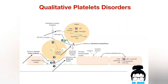Another disorder results from thromboxane deficiency caused by aspirin. Aspirin irreversibly inhibits the cyclooxygenase enzyme, which is part of the arachidonic acid pathway, so the end product thromboxane won't be produced and platelets won't be attracted to the site of injury. The other disorder is Glanzmann's thrombasthenia, which happens due to GP2b3a deficiency. Since GP2b3a is needed to connect platelets together, when it is deficient, aggregation won't happen and step four is impaired.